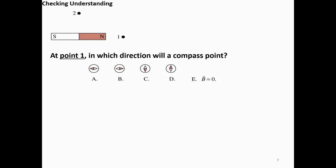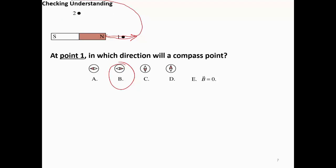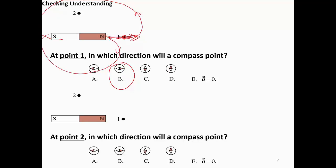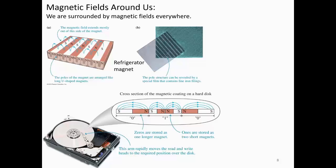Checking understanding: at point A, in which direction will the compass point? The compass rule is just like a test charge — it always points in the direction of the field. The answer is B, because the magnetic field at point A goes in that direction, tangent to the field line. At point two, using the same approach, you complete the magnetic flow pattern and since the field goes toward the north side, the compass points in that direction — so A is the answer.